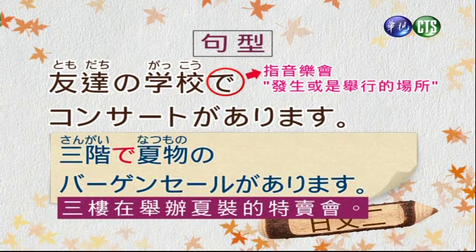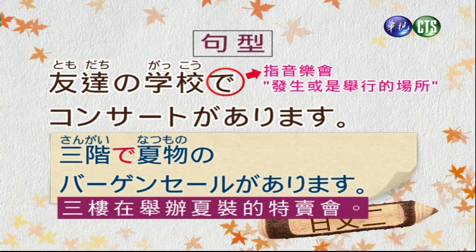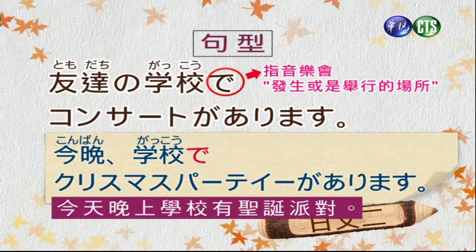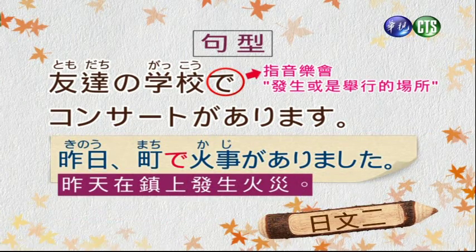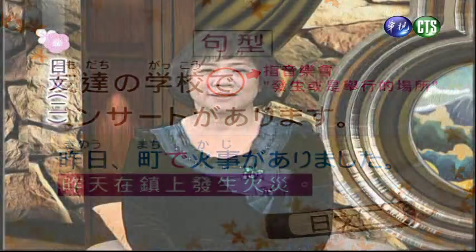例句：三階で夏物のバーゲンセールがあります（在三樓舉辦夏季特賣會）。今晩学校でクリスマスパーティがあります（今天晚上在學校舉辦聖誕派對）。昨天在鎮上發生了火災。這裡講到で的用法，同學們不要以為で就只表示場所，會跟以前學過的場所に的用法搞混。で也表示有動態的意思，表示有動作發生或舉辦舉行的意思。